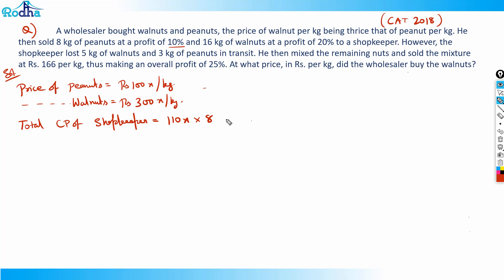Plus 20% profit on walnuts: 300x with 20% profit is 360x. So 110x into 8 plus 360x into 16. This equals 36 into 16 plus 880, which equals Rs 6640x. This is the total cost price of the shopkeeper for the first part.